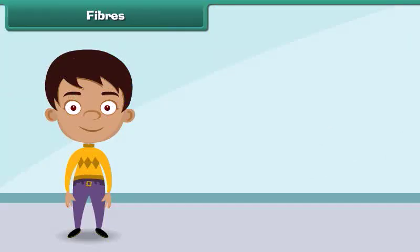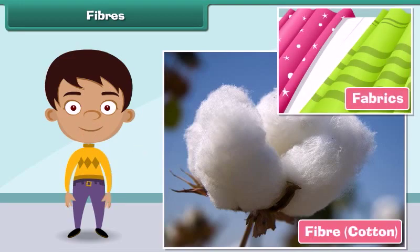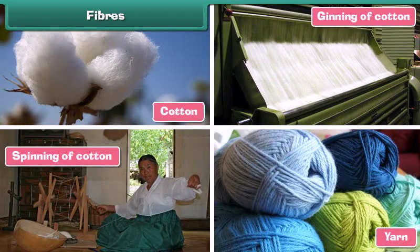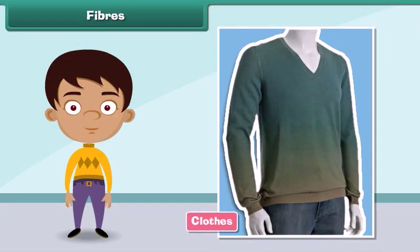Fiber is the raw material used in manufacturing clothes. Fibers are transformed into clothes through a series of steps. First, raw fibers are twisted together to form long strands of threads known as yarns. The yarns are then woven and knitted to form fabrics.